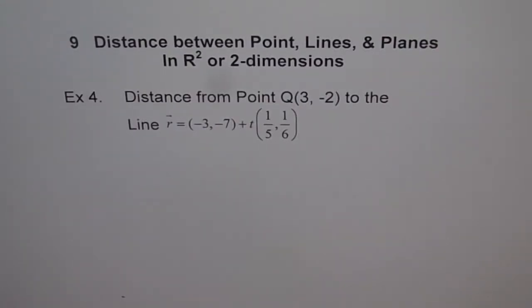Distance between point and the line in two dimensions. Example 4: Distance from point Q(3, -2) to the line r = (-3, -7) + t(1/5, 1/6). So we have a vector equation here, and we need to find the shortest distance.